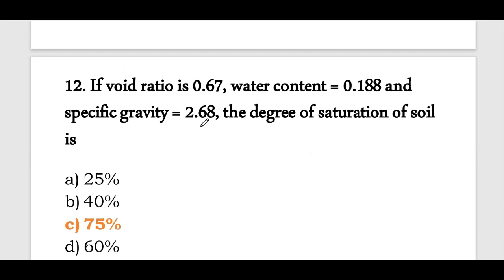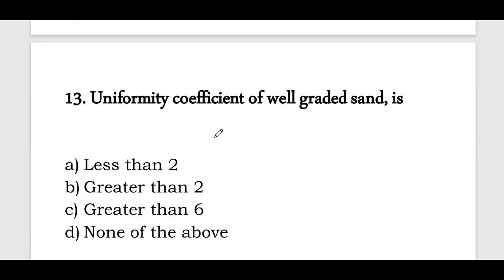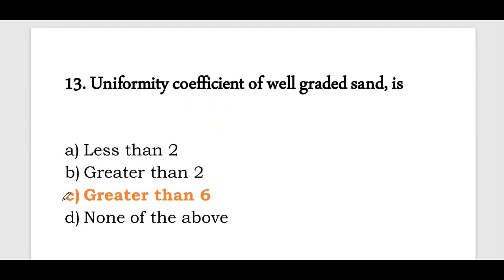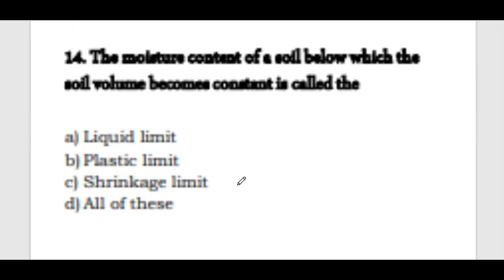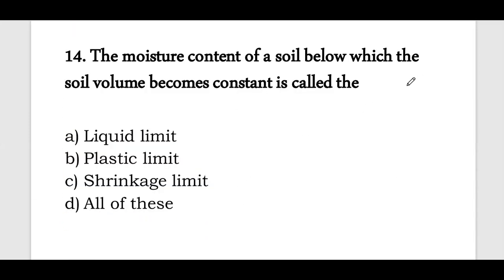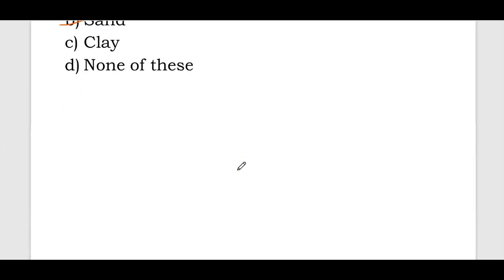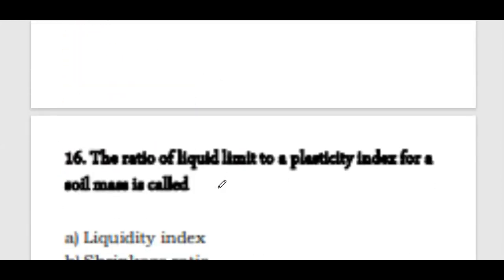Question 10: Consistency limits are given by Atterberg. Question 11: Inorganic clay of high compressibility - CH is nothing but high clay, so option B is correct. Question 13: Uniformity coefficient of well-graded sand is greater than 6. Question 14: The moisture content of soil below which the soil volume becomes constant is called the shrinkage limit. Option C is correct.